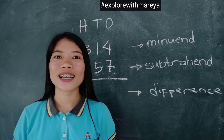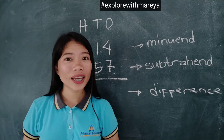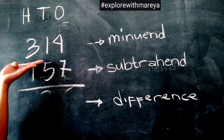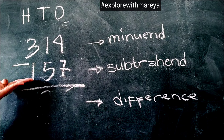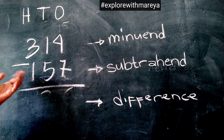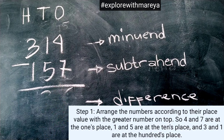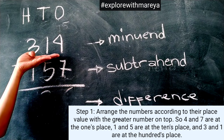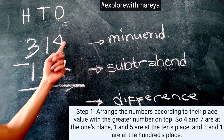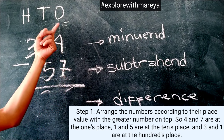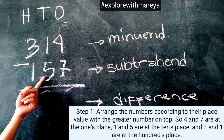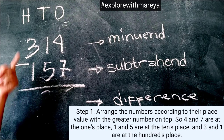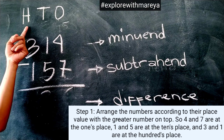Let's try another example. Don't forget to follow the steps. 314 minus 157. Step 1: Arrange the numbers according to their place value with the greater number on top. 4 and 7 are at the 1's place, 1 and 5 are at the 10's place, and 3 and 1 are at the 100's place.